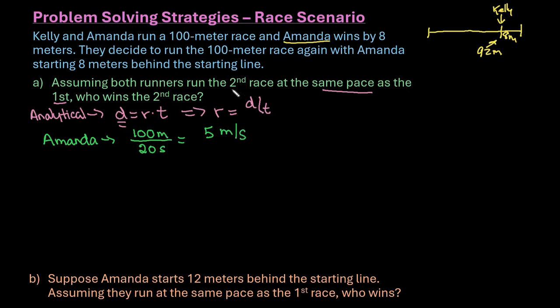If we use this as her constant rate for the second race, we can see if we still use distance equals rate times time whether she will cross the finish line first or whether Kelly will.